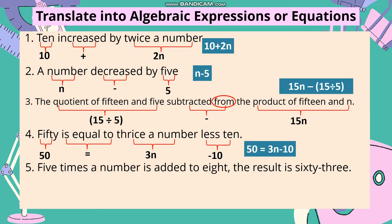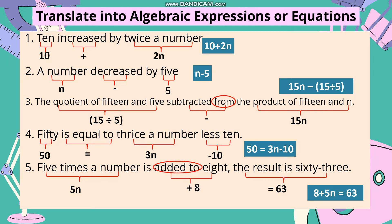Number 5: '5 times a number is added to 8. The result is 63.' '5 times a number' is 5n. 'Added to 8' is plus 8. 'The result is 63' means equals 63. Because of the phrase 'added to,' the order is reversed — 5n is being added to 8, so 8 comes first. Our mathematical symbol is 8 plus 5n equals 63.